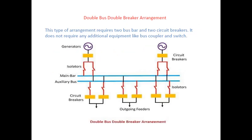The next type is the double bus double breaker scheme. In this modification, a bus coupler is connected between the main bus and an auxiliary bus. Each circuit has two dedicated circuit breakers, providing flexibility to connect a feeder to either the main bus or the auxiliary bus using isolators. If one bus bar gets overloaded due to heavy load, the auxiliary bus bar can be connected by switching isolators. Hence, it is called the double bus double breaker scheme.